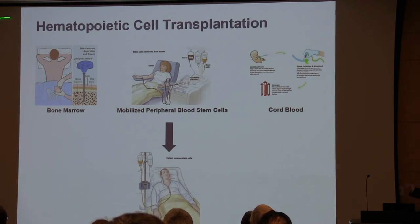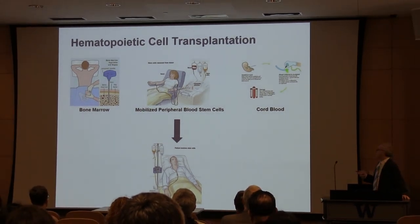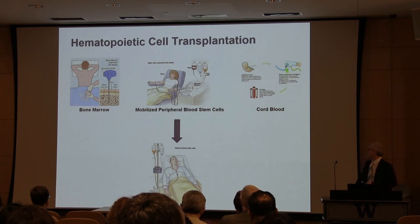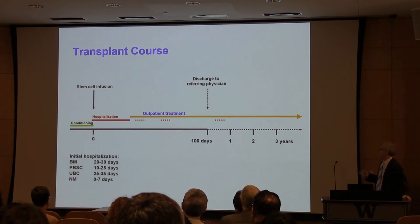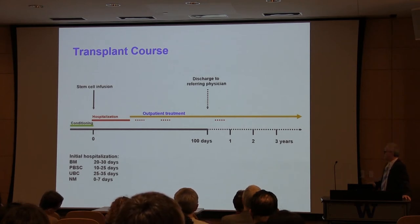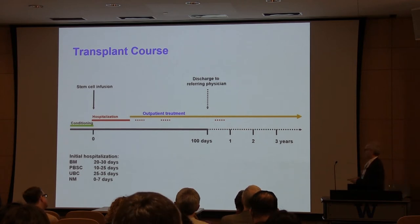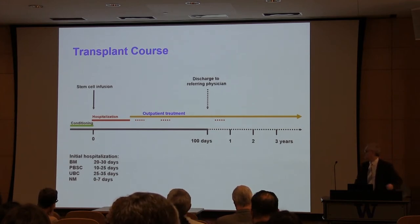We obtain different sources of stem cells — either through bone marrow aspiration, mobilized peripheral blood stem cells, or cord blood — which are then infused into the patient after a conditioning regimen with chemotherapy and/or radiation. The transplant follows a standard pattern: first the conditioning, then the stem cell infusion, a period of hospitalization, then outpatient clinic, and typically around three months the patients are referred back to their referring physician if doing well.